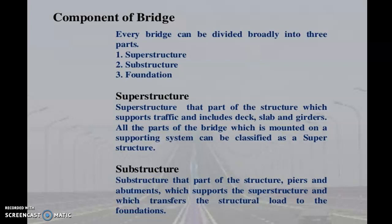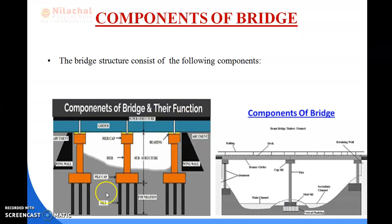I want to explain what a pier is. In this picture I am showing the piles, pier cap, and the pier itself. Piers are vertical structures used to support the deck or bearing, providing load transmission to underground soil through the foundation. The main purpose of the pier is to transmit the load from the superstructure through the substructure to the ground soil. This structure serves as a support for the bridge span at intermediate points.